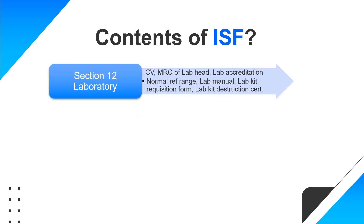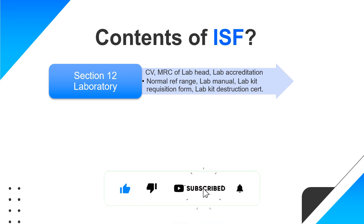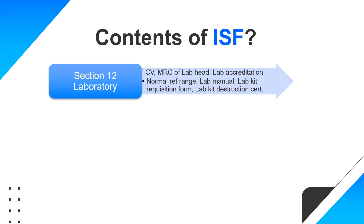Section 12 contains documents regarding the laboratory — both the local laboratory and the central laboratory, as samples are sometimes shipped to the central lab. The CV and MRC of the lab head are filed here, as well as lab accreditation. Normal reference ranges, the lab manual used during the clinical trial, lab kit requisition forms, and destruction certificates — all documents related to the laboratory are filed in section 12.